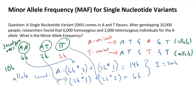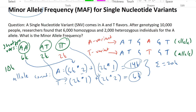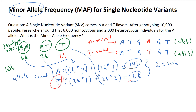Now that we know the allele counts for both variants in our population, we can identify the minor allele — whichever one there are fewer of. In this case, our minor allele is T with 6,000 copies. We then plug and chug: 6,000 divided by 20,000 total alleles is equal to 0.3, or 30%. So 30% is the minor allele frequency in this population.